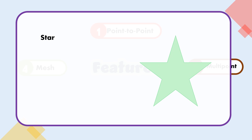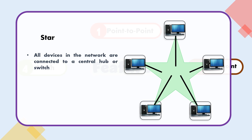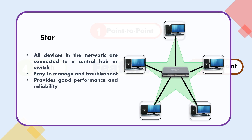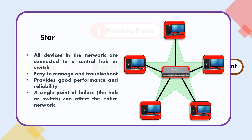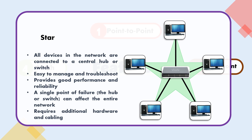Star: All devices in the network are connected to a central hub or switch. It is easy to manage and troubleshoot, and provides good performance and reliability. However, a single point of failure — the hub or switch — can affect the entire network. It also requires additional hardware and cabling.